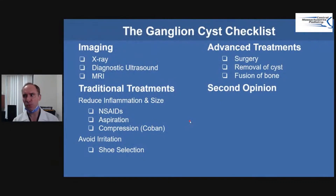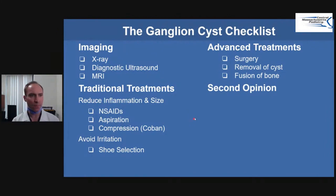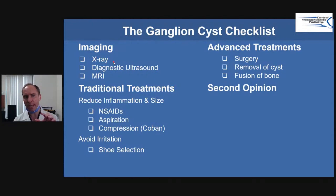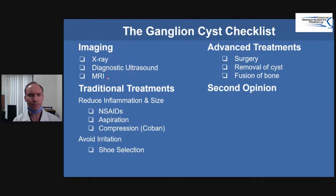I like to use checklists — this really helps me out. If you're going to your doctor, you can even use this checklist and bring it with you. You want to get an x-ray to start, to see if there are any issues or if it's coming from a joint. You might want to mark it with a metallic marker. Then you could do a diagnostic ultrasound — that's what I find most beneficial. And if I'm still unsure, I'll do an MRI.